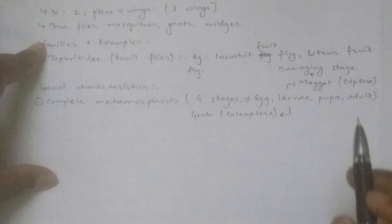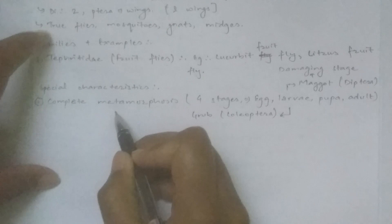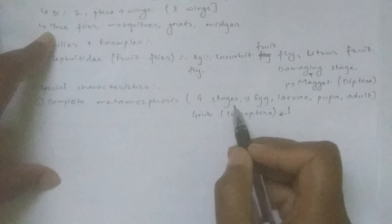Oriental Fruit Fly belongs to the order Diptera and undergoes complete metamorphosis. There are four stages in its life cycle.